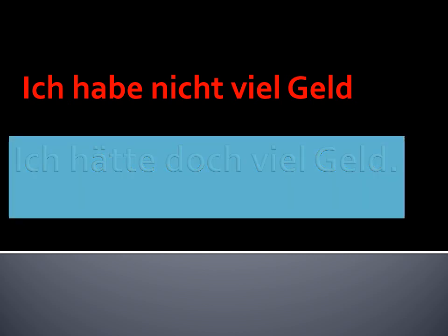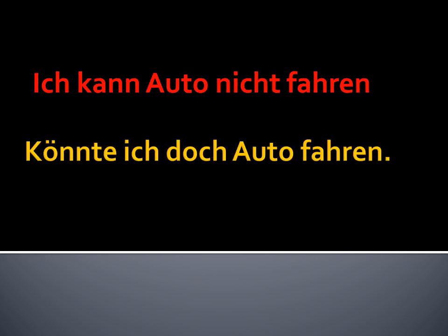Another sentence: 'Ich kann Auto nicht fahren' — I cannot drive a car. This is the reality. And what is my wish? 'Könnte ich doch Auto fahren.' The modal verb 'kann' is changed into Konjunktiv 2 form 'könnte'. You can also start with the verb — no problem: 'Könnte ich doch Auto fahren' — if I could drive a car. This is my wish. This is called Konjunktiv 2.